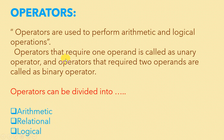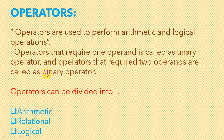Now let's move to the definition. Operators are used to perform arithmetic and logical operations. An important concept here is: operators that require one operand are called unary operators, and operators that require two operands are called binary operators. This is important because in an examination there may be a question: what is a unary operator and what is a binary operator? Unary means one or single; binary means two.